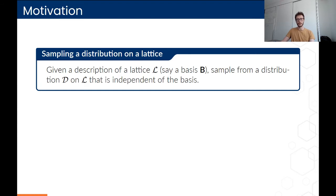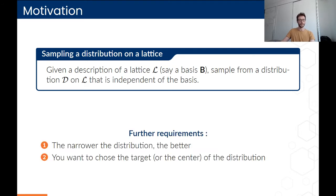We're interested in the following problem. We're given a description of a lattice, which you can think of as a basis, and we want to sample from a distribution D whose support is a subset of the lattice L, independent of the basis. For an algorithm to be a good solution to this problem, we require that it's possible to sample from a narrow distribution with respect to the input description of the lattice.